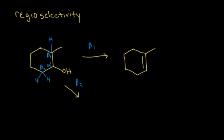For the beta 2 pathway, the double bond forms between the alpha and the beta 2 carbon. The methyl group remains, the OH leaves as water, and the double bond forms between alpha and beta 2. So we have two different products for this reaction. The question is: which one of these two will be the major product?